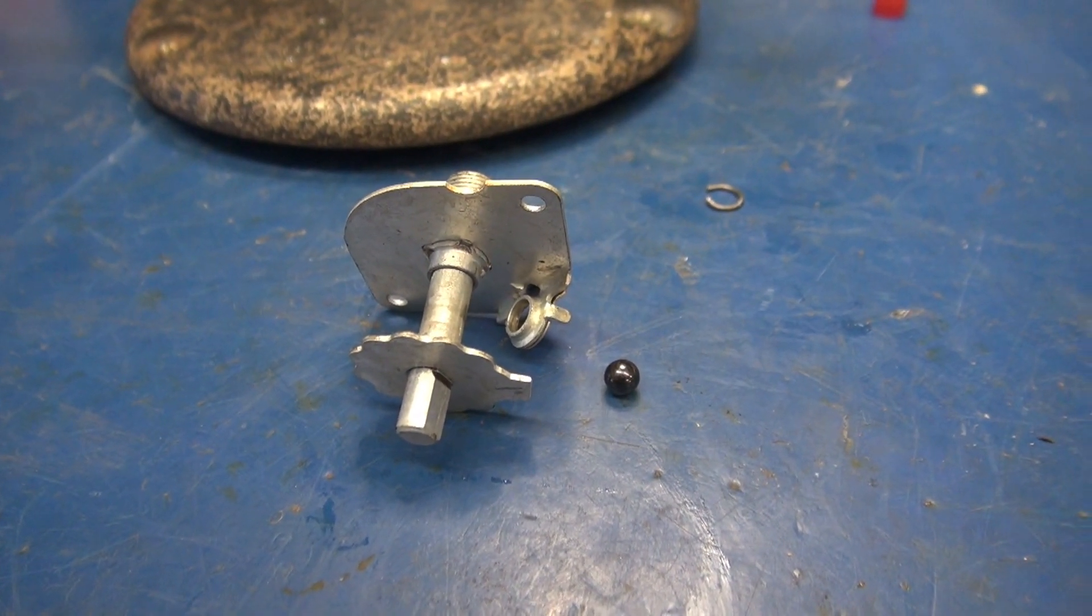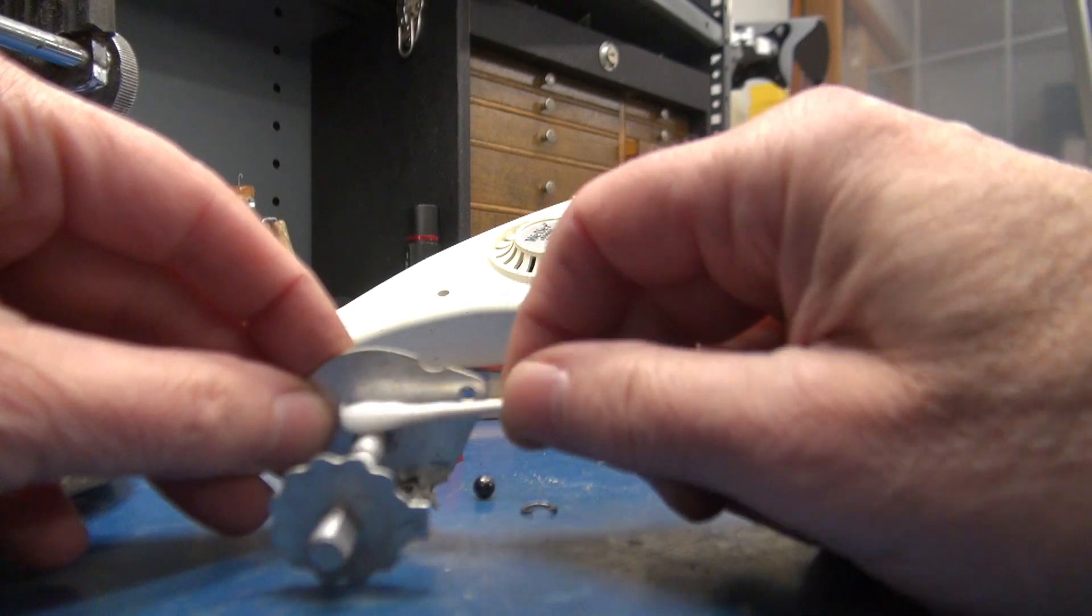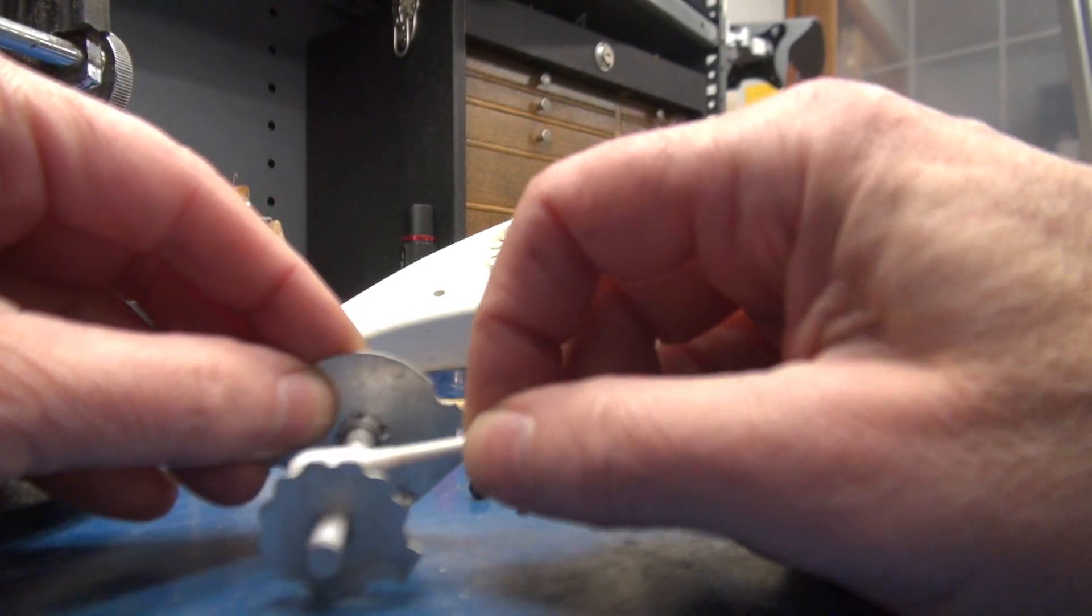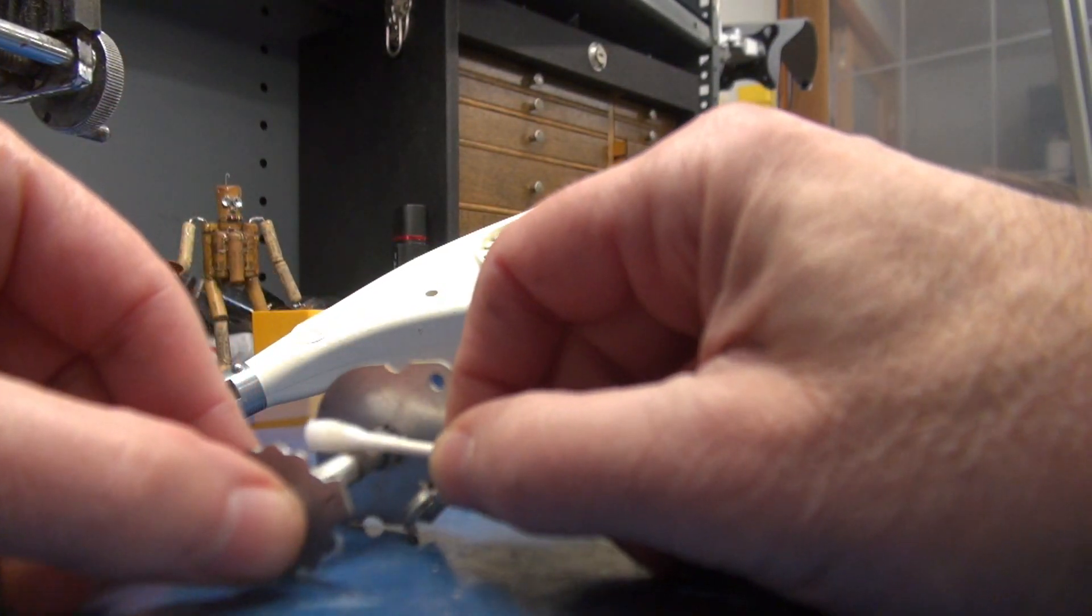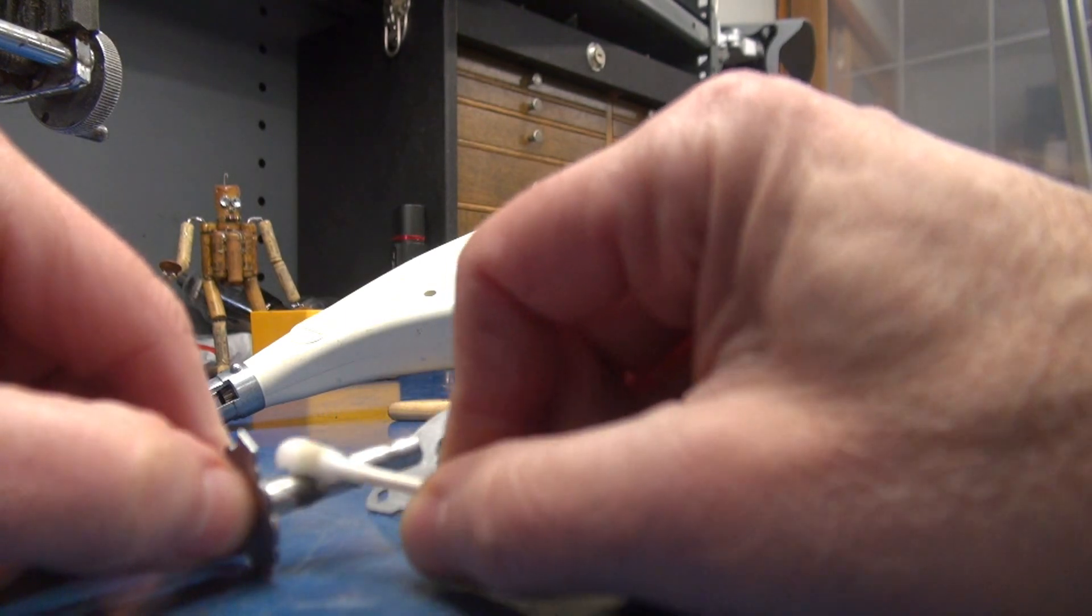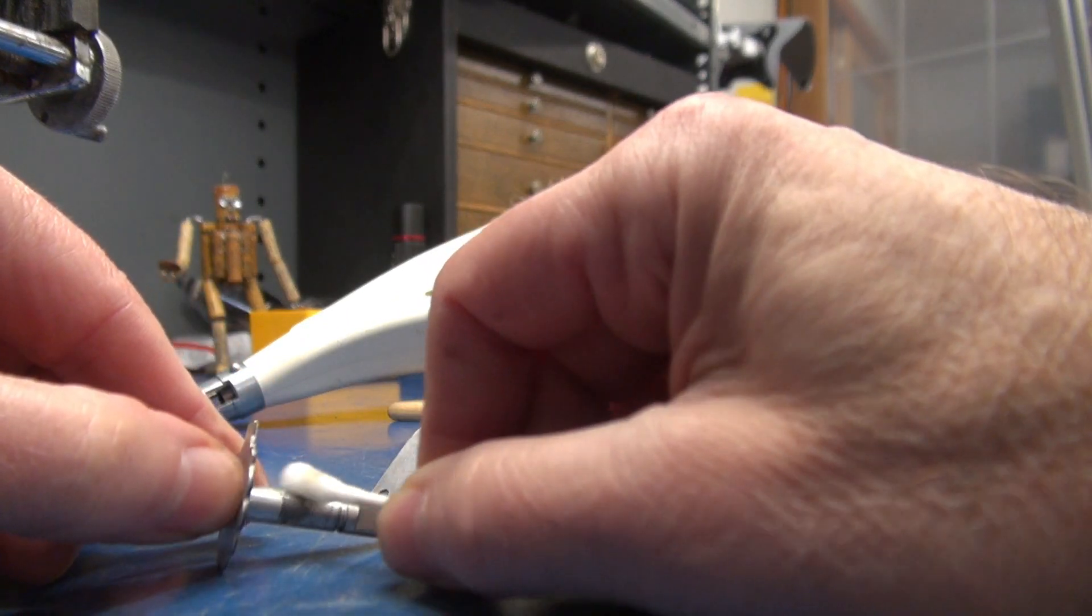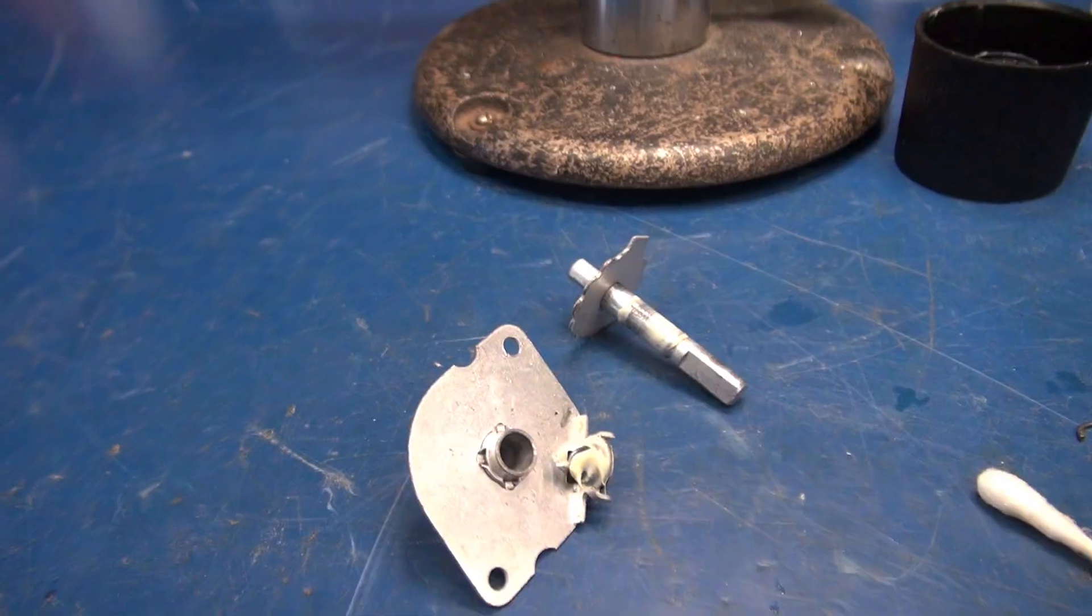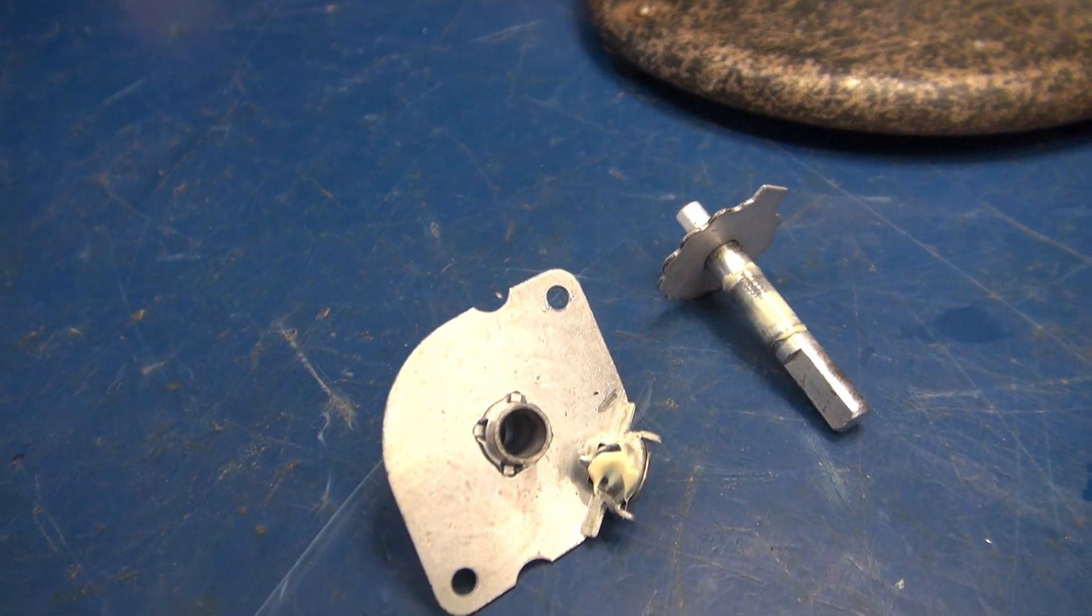I've got it ready to clean and lube. I use lacquer thinner on a Q-tip to clean off that old lube, even though there's no sign of it. Then reapply some white grease and put her back together. It's all cleaned and greased up.